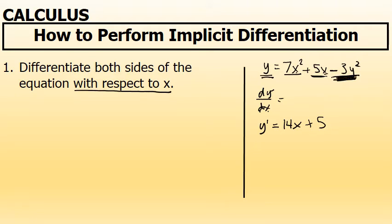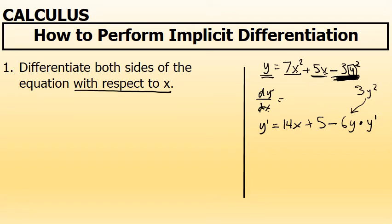The last term, minus 3y squared — this is where implicit differentiation will have to happen, because we're differentiating with respect to x but the variable is y. Implicit differentiation is actually applied using the chain rule. Because this variable is something other than x, I'm going to first differentiate 3y squared using the power rule — 2 times 3 being 6, y to the first power. But because this variable is something other than x, I'm going to chain along, at the end, the derivative of y with respect to x, which I'm using as y prime. So the derivative of 3y squared with respect to x is 6y times y prime.